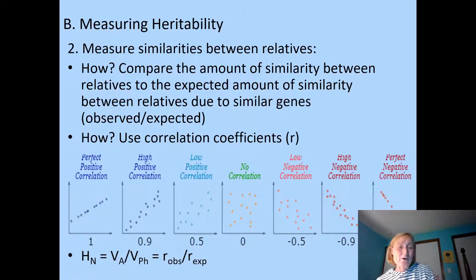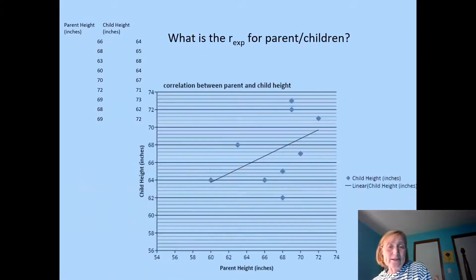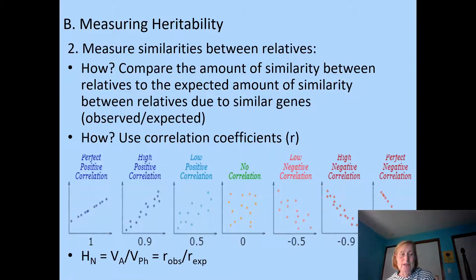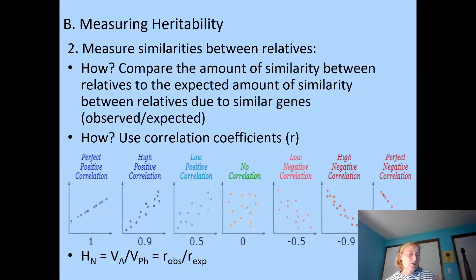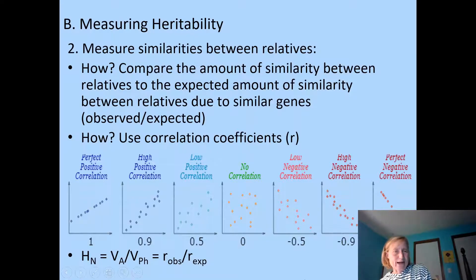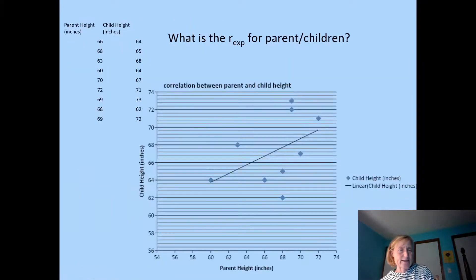We can calculate heritability in the narrow sense as the proportion of phenotypic variance due to additive genetic effects (VA). In other words, we're still looking at the proportion of variance that's due to variation in genetics.